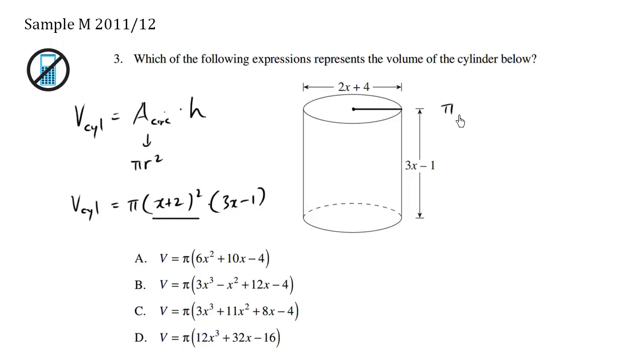So we have π times, so x times x is going to be x², and then we're going to do x times 2 is going to be 2x, and we double it to get 4x. And then for the last part, we do the last number times the last number, which is 2 times 2 is positive 4, multiplied by 3x - 1.